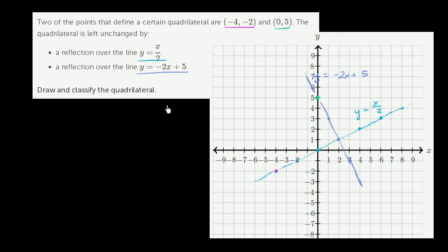Now let's see if we can draw this quadrilateral. Let's reflect the points we have over the line y is equal to x over 2. This magenta point, the point negative 4 comma negative 2, is already on that line. So it's its own reflection — it's on the mirror, one way to think about it.